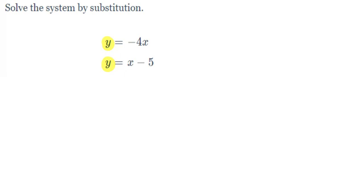So I'll use arrows. What I'm going to do is clarify that y equals negative 4x and y equals x minus 5.